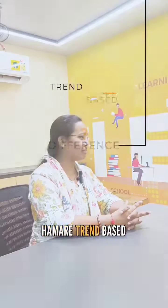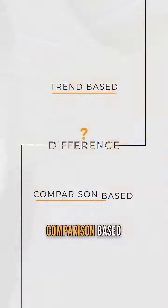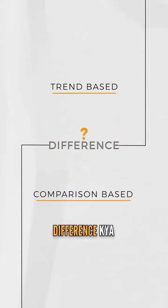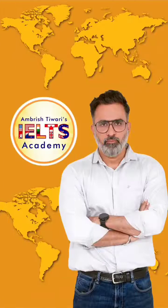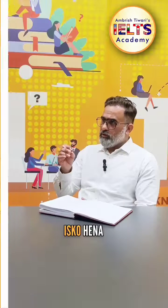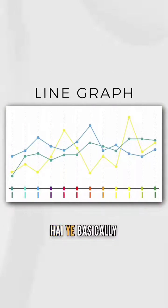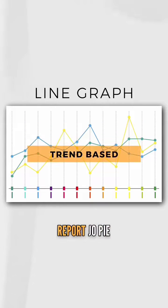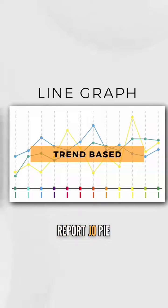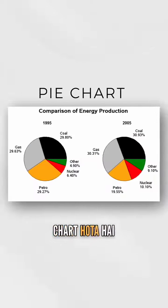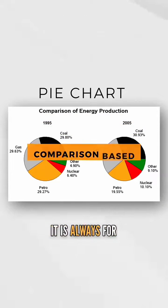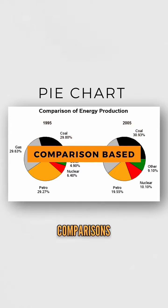What is the difference between the two types of report writing, trend-based and comparison-based? Let me understand this. The line graph is basically a trend-based report. The pie chart is always for comparisons.